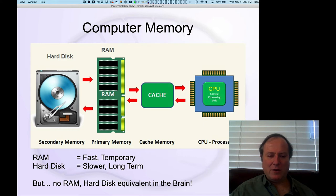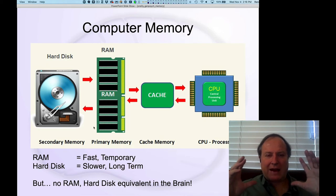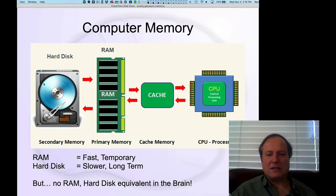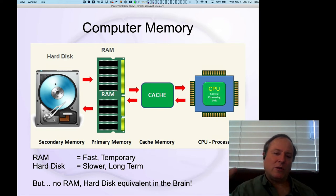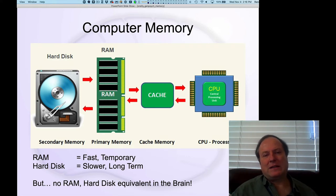In a computer, the properties of short, fast, temporary active memory in RAM versus longer-term, more durable but slower episodic memory — that metaphorically makes sense.